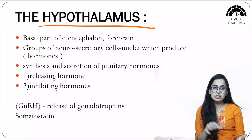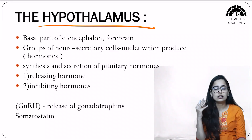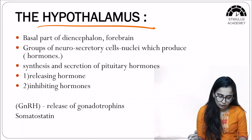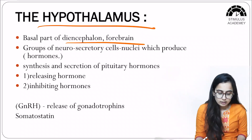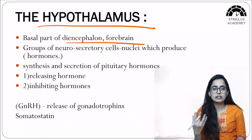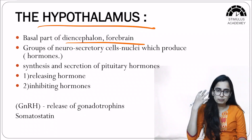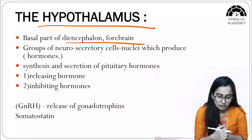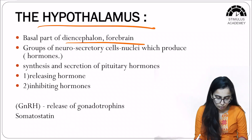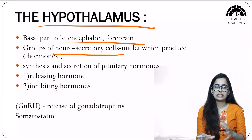Hypothalamus is the basal part of the diencephalon, and the diencephalon is part of the forebrain. As the name suggests, 'hypo' means below the thalamus, so it is the basal part of the forebrain. Because it is part of the endocrine system, it contains secretory cells — specifically, hypothalamus is made up of a group of neurosecretory cells.